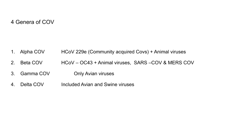Through sequencing and antigenicity studies, animal and human coronaviruses are divided into four groups. The first is the alpha coronavirus, which includes the four community-acquired coronaviruses plus some animal viruses. The beta coronavirus includes OC43, some animal viruses, the original SARS coronavirus, and MERS coronavirus. The third and fourth groups are mostly gamma coronaviruses, which are only avian viruses, and delta, which includes avian and swine viruses.